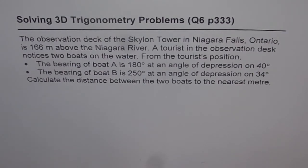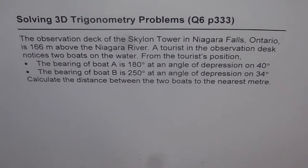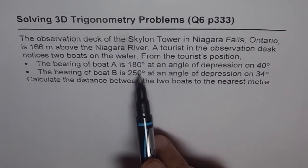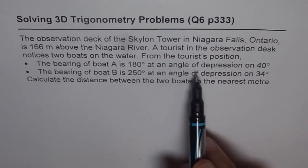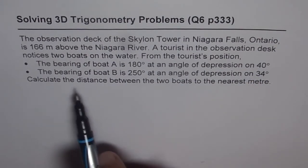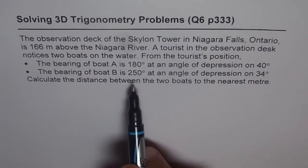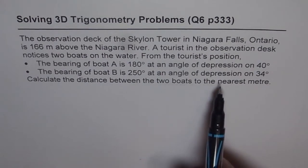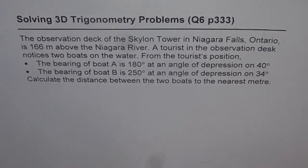Here is an interesting question from the book. The observation deck of the Skylon Tower in Niagara Falls, Ontario is 166 meters above the Niagara River. A tourist in the observation deck notices two boats on the river. From the tourist's position, the bearing of boat A is 180 degrees at an angle of depression of 40 degrees. The bearing of boat B is 250 degrees at an angle of depression of 34 degrees. Calculate the distance between the two boats to the nearest meter.